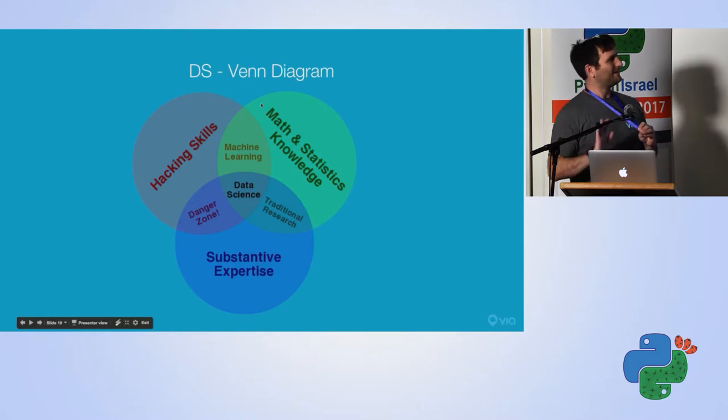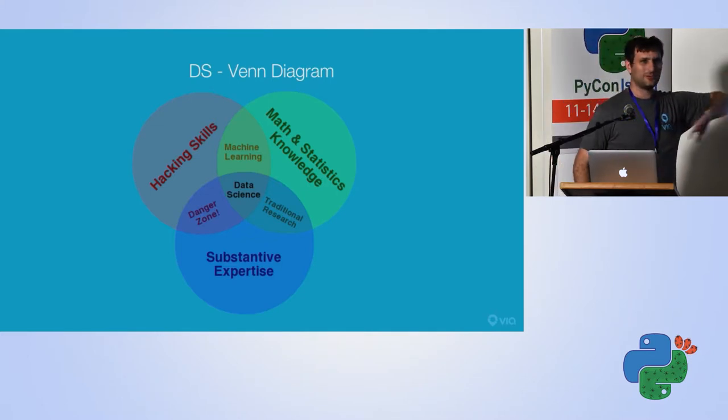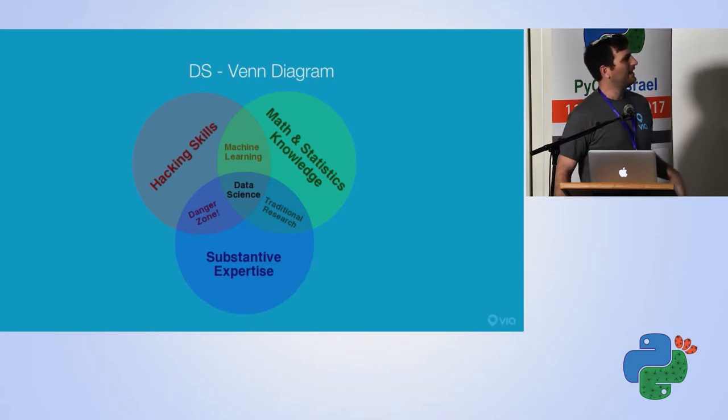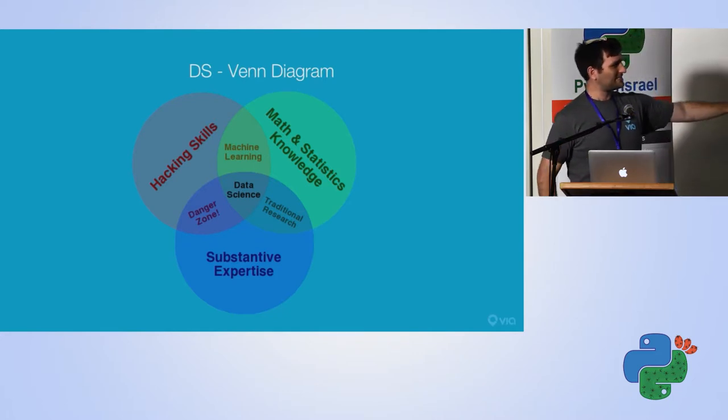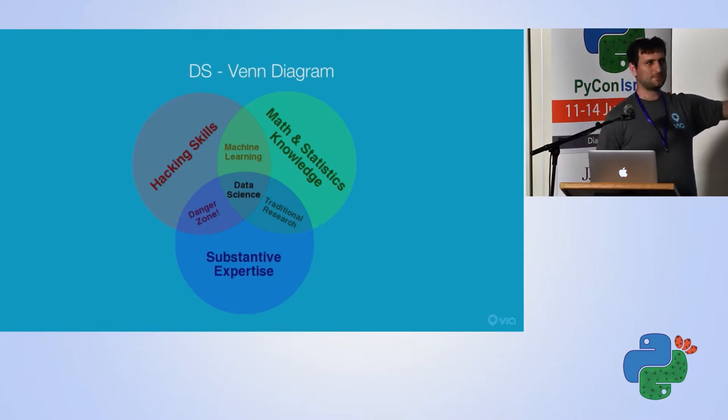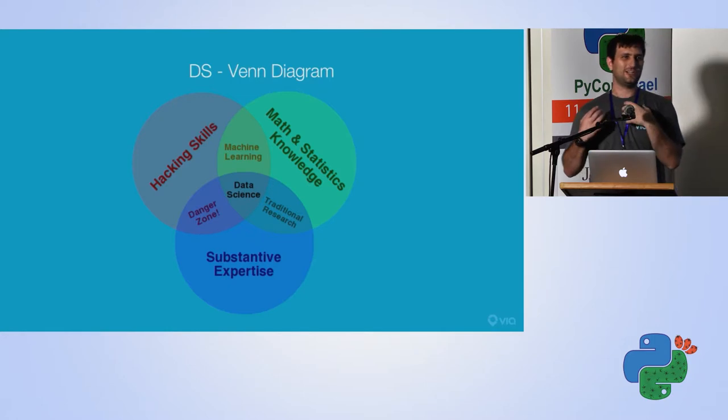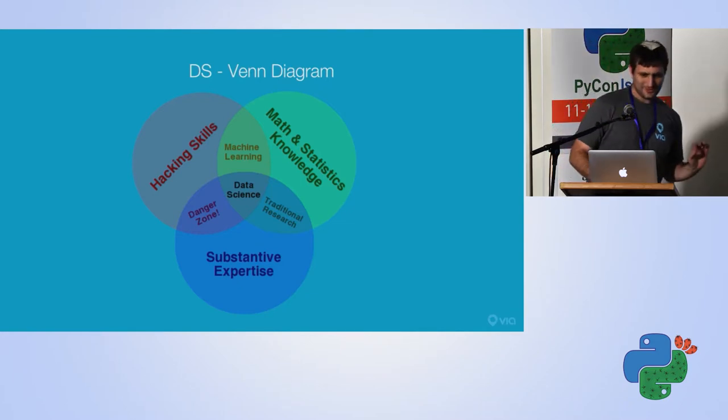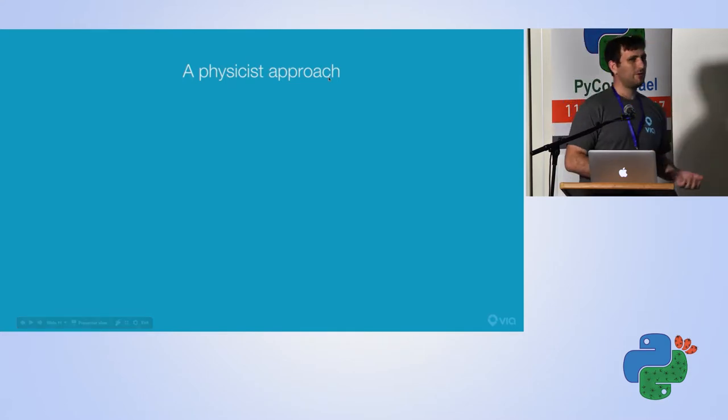I want to go back to this Venn diagram, which hopefully you've all seen so many times that you're sick of looking at it. We are at PyCon, so almost all the lectures are probably about hacking skills. Some of us are talking about math and statistics knowledge and all sorts of cool packages in Python that allow us to implement them. But I'm going to discuss the bottom circle, which we don't often discuss, which is substantive expertise or domain knowledge. We don't like discussing it because we tend to think that my domain knowledge is in ride sharing and it's completely irrelevant to your domain knowledge, which is in cyber security or fraud or finance. So it's irrelevant. And I will try and convince you that that's not always the case.